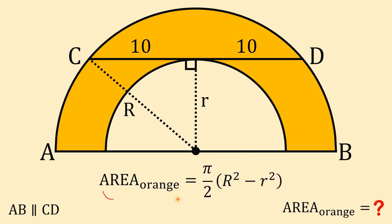We can say that the area of the orange region equals π over 2 multiplied by capital R squared minus small r squared. The question is: how do we get the value of capital R squared minus small r squared?